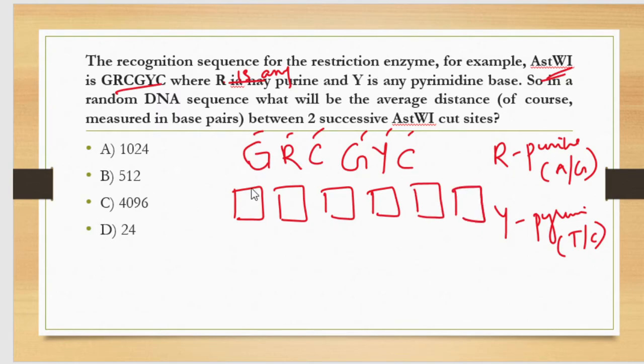Let's say we have six positions where these sequences can occur. The probability of occurring G in the first position - we know that we have four bases, and among that one is G, so the probability is 1/4. What about second? It is given R. R is any purine, we know that there are two, so that becomes 2/4.